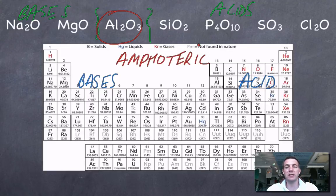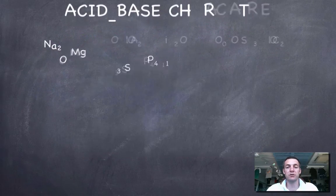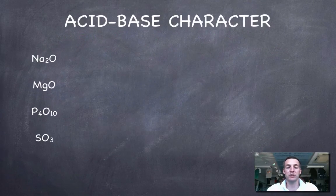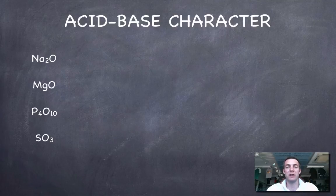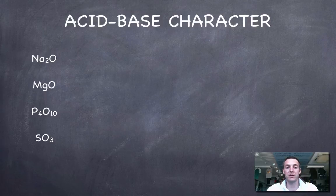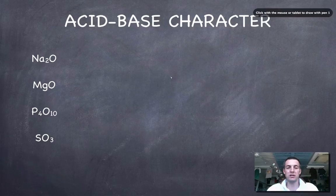Now the nice thing in the standard level course is that you don't have to write equations to show why aluminium oxide is amphoteric. And the other bit of good news is that you don't have to write equations for all the oxides reacting with water and showing why they are acidic or basic when they do that. But you do have to do it for these four. So here's how we do it.